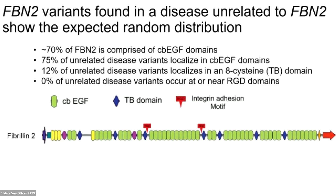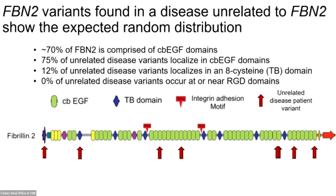As a negative control, we can look at the distribution of rare fibrillin 2 variants in a completely unrelated disease that we would not expect to be related to fibrillin 2 at all. Again, 70% of the protein is comprised of calcium-binding EGF domains, and for this unrelated disease, 75% of rare variants localized to calcium-binding EGF domains, whereas only 12% localized to TB domains and none localized near RGD domains — more what you would expect based on random chance.